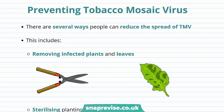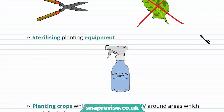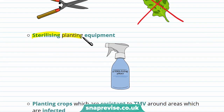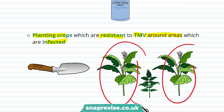Tobacco Mosaic Virus, or TMV, can result in a huge loss of profit, so people try to prevent its spread. One way includes removing the infected plants and leaves, which stops the virus from spreading to other plants. Another way is by sterilising planting equipment, which kills the viruses. A third way is by planting crops that are resistant to TMV around areas which are infected, because the resistant plants block the spread of the virus to non-resistant plants.